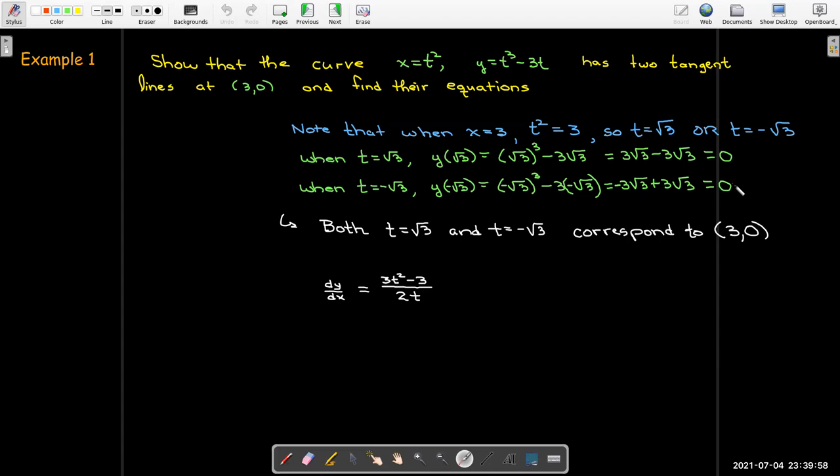Now calculating the derivative is pretty simple. It's just y prime over x prime. And so let me evaluate that expression. First, when t equals radical 3, that would give me 3 times 3 is 9 minus 3 is 6, 6 divided by 2 is 3. So I'll get 3 over radical 3, which is the same as radical 3. So the equation or an equation of one of the tangent lines is y equals radical 3 parentheses x minus 3.